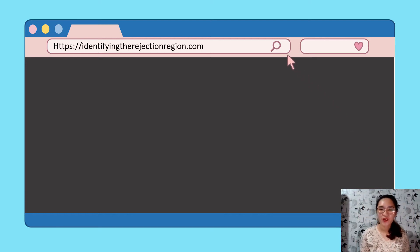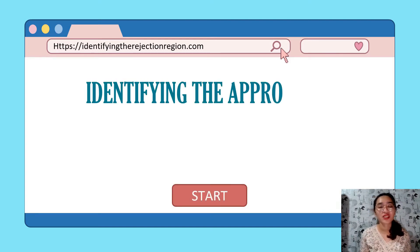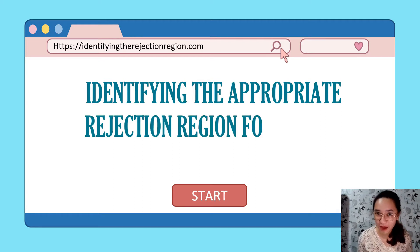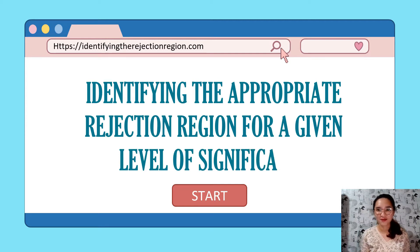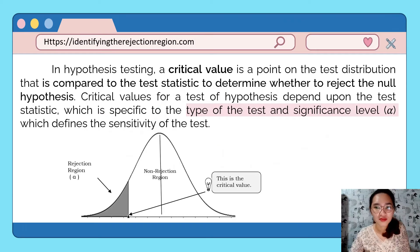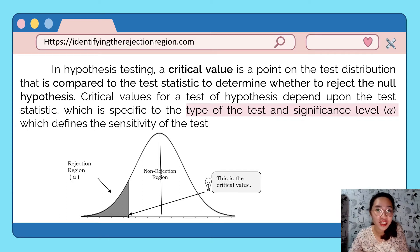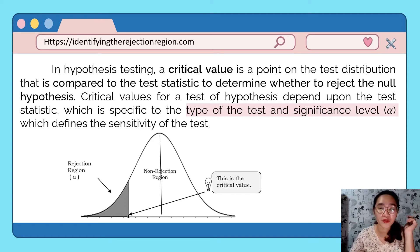Hi everyone, it's Teacher Will. Welcome back to our statistics and probability subject. For today's lesson, we are going to learn another important step in the process of hypothesis testing. A researcher collects sample data, formulates the null and alternative hypothesis, chooses appropriate test statistics, and computes it. The range of values that leads the researcher to reject the null hypothesis is called the region of rejection, which we introduced in our previous video.